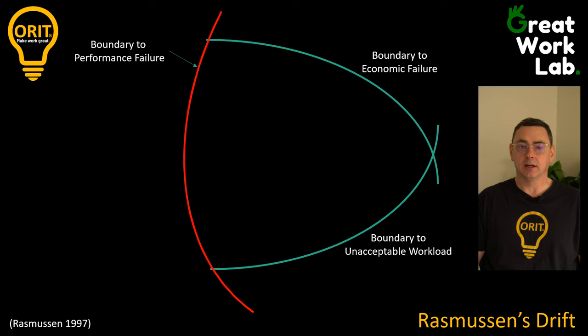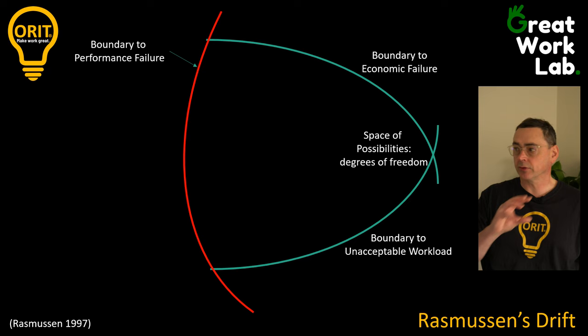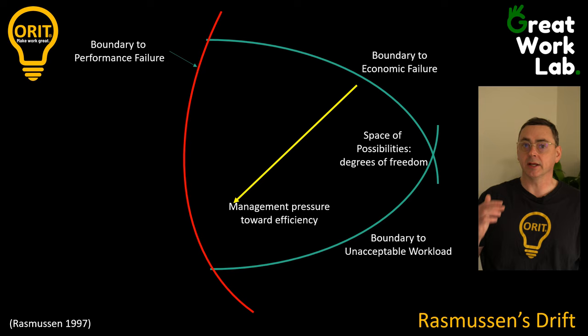Within those boundaries we have the space of possibilities — degrees of freedom — where the system will operate safely with three degrees of freedom. Meanwhile, we have management pressure away from the boundary to economic failure and towards efficiency: getting more done with less, trying to get more profit, and minimizing costs and expenses.